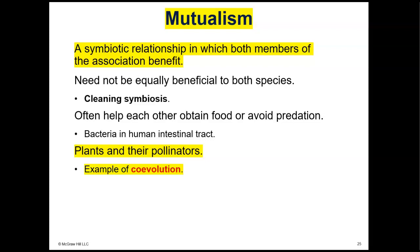Mutualism is when both species benefit. Plants and their pollinators — flowering plants and their pollinators — are not only a case of mutualism, but also an example of co-evolution. The bee is the pollinator and the flower is the plant. The bee benefits because it gets nectar from the flower, and the flower benefits because the bee helps take its pollen from one flower to another. So the bees help pollinate the flowers, and the flowers give food to the bees.